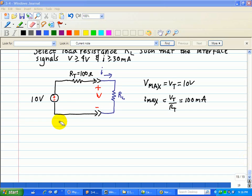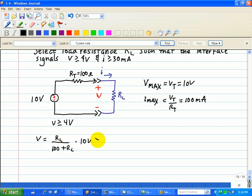So, let's look at the first constraint, where we have V greater than or equal to 4 volts. We're going to use the voltage divider since RT is in series with RL. So V, the voltage across RL, is simply RL over 100 plus RL times 10 volts. That is greater than 4 volts, and when you cross multiply, that yields 10RL greater than or equal to 400 plus 4RL.